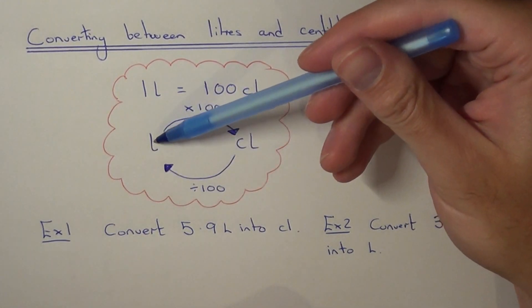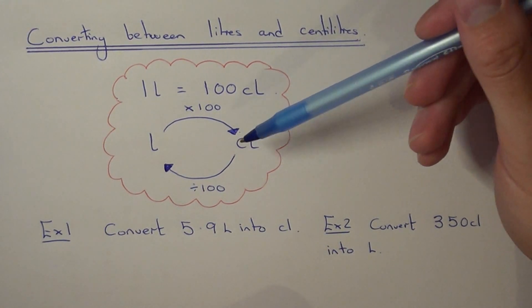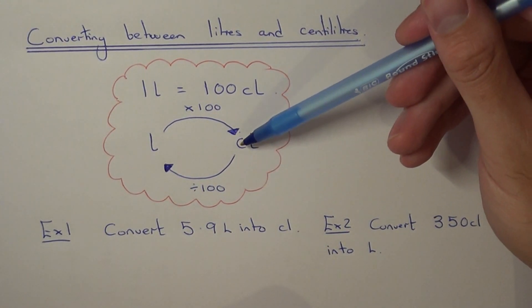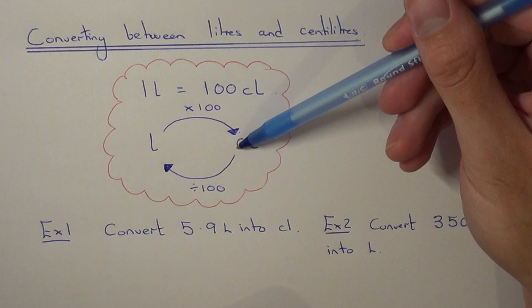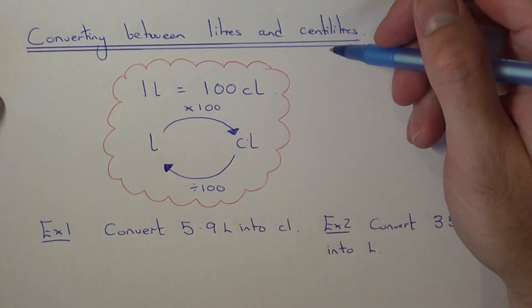So converting liters into centiliters, you need to multiply the number by 100. But if you're converting from centiliters into liters, you divide the number by 100. Let's have a look at our two examples here.